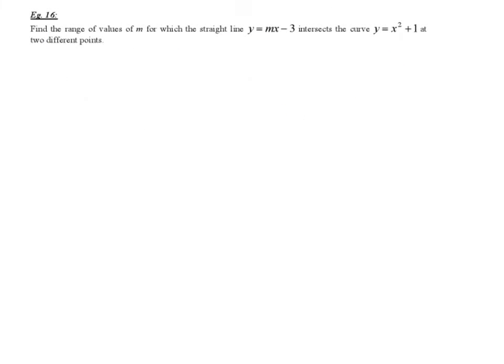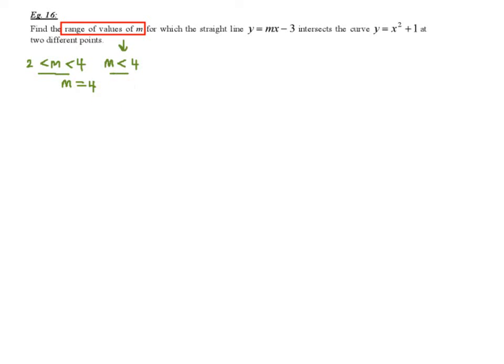Let's start with Example 16. Find the range of values of m. When you see 'range of values of m', your answer should be in the form of an inequality, like m less than 4 or m more than 2. You cannot write m equals 4. The straight line y equals mx minus 3 intersects the curve y equals x squared plus 1 at two different points.